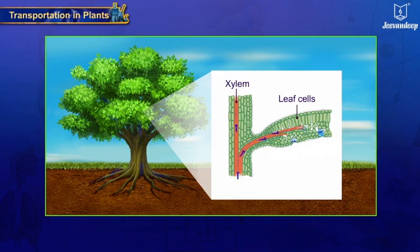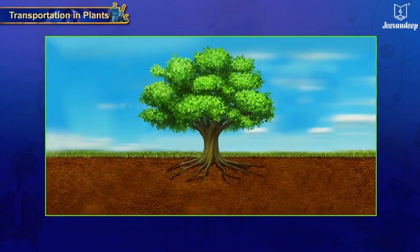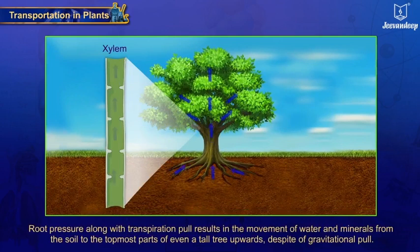Xylem vessels of the leaf in turn take water from the xylem of the stem and xylem of the root. Thus, transpiration creates a sort of pull or suction called transpiration pull. Root pressure along with transpiration pull results in the movement of water and minerals from the soil to the topmost parts of even a tall tree, upward despite gravitational pull.